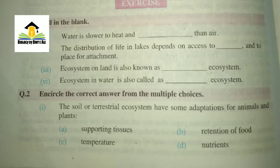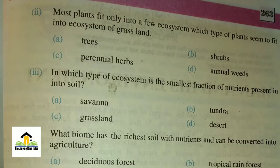MCQ number one: The soil of terrestrial ecosystem has some adaptations for animals and plants. A) supporting tissues, B) retention of food, C) temperature, D) nutrients. The right answer for this MCQ is A, supporting tissues.